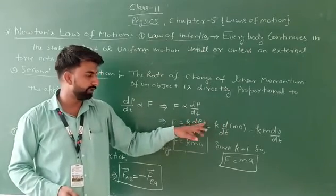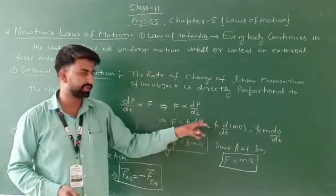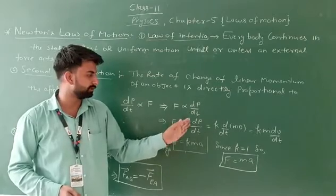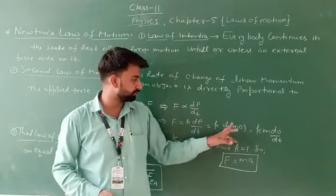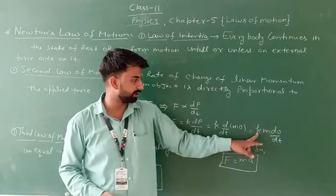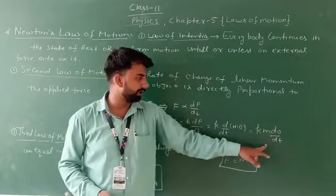Which is equal to k d/dt of p. In the last video we saw p is the linear momentum, which means mass into velocity. So p equals mv. Mass is constant, so this is k into m and dv/dt.